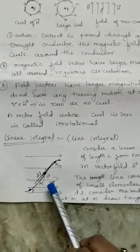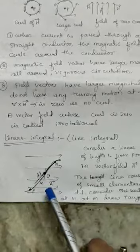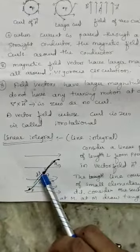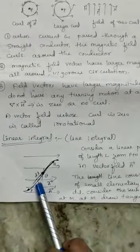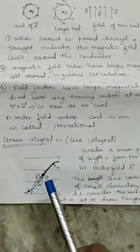The line consists of small elementary lengths considered as DL. Consider one such element at point M.